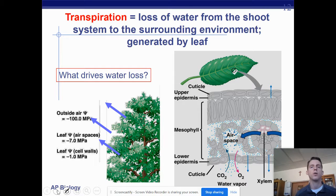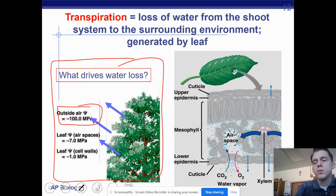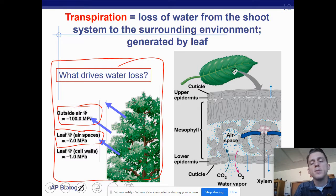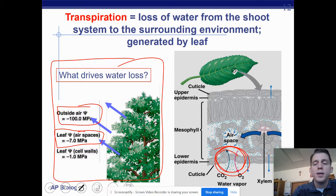Transpiration is the loss of water from the shoot to the surrounding environment, and water potential ultimately drives this water loss. The outside air has a very, very low water potential — around negative 100 — while the leaf is at around negative 7. So evaporation happens quickly because there is a big difference in water potential. Water moves from the leaf (higher water potential) to the air (lower water potential). The stomata allows water to evaporate out and also helps collect CO2.